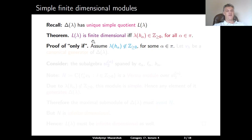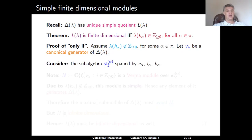Let's prove the only-if part of this statement. Assume that λ(H_α) is not a non-negative integer for some simple root α. Denote by v_λ the canonical generator of Δ(λ), and consider the SL₂ subalgebra of G corresponding to root α, spanned by E_α (root element for α), F_α (root element for −α), and H_α = [E_α, F_α].